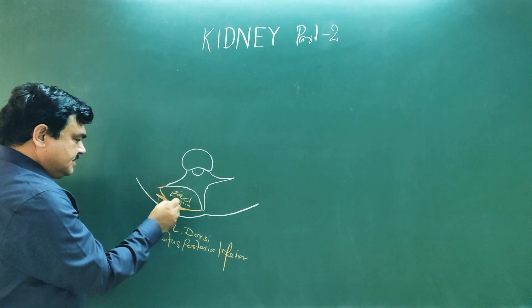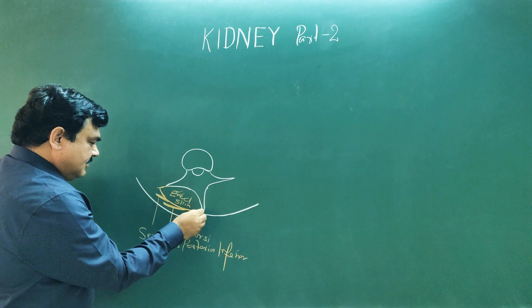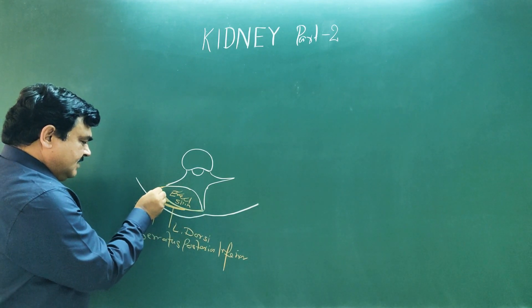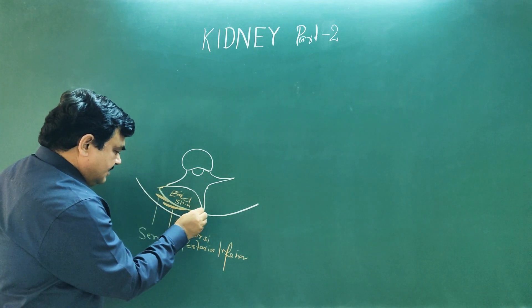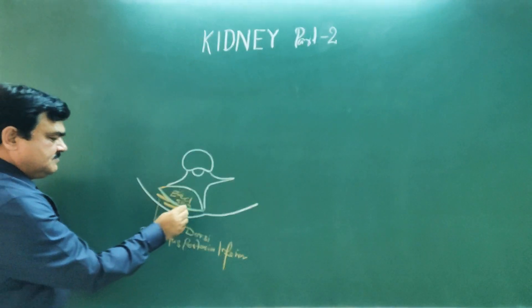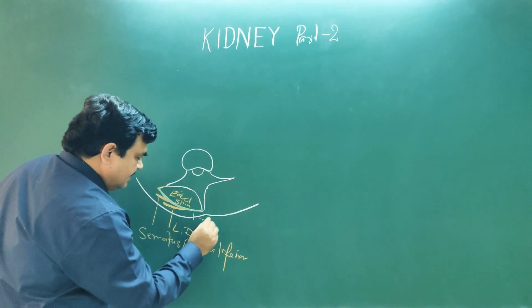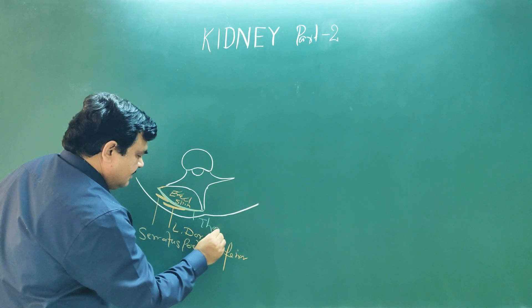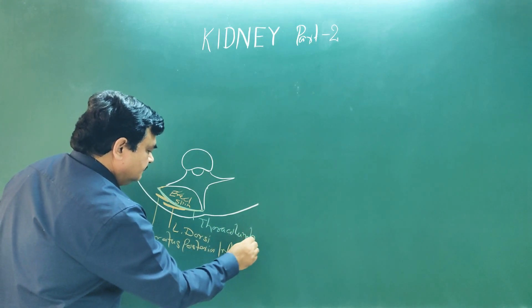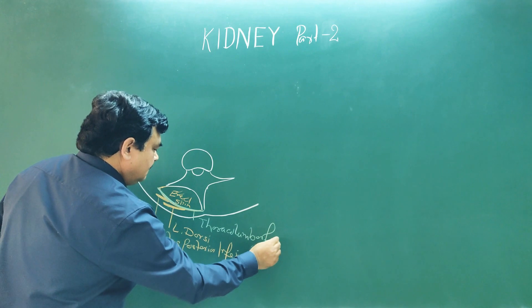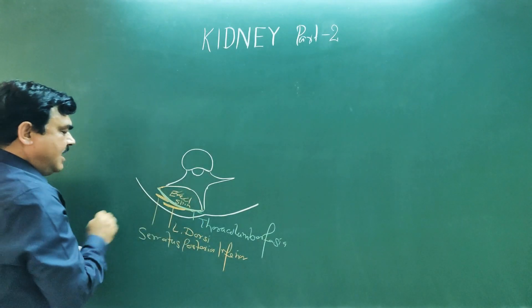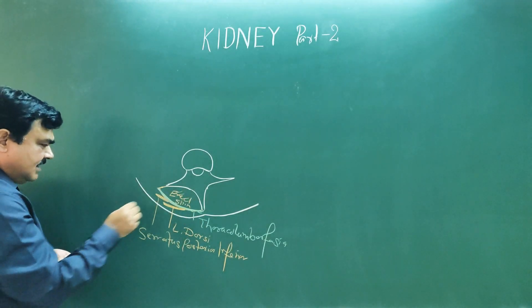And this muscle is covered by fascia here. This is thoracolumbar fascia. This fascia is thoracolumbar fascia.